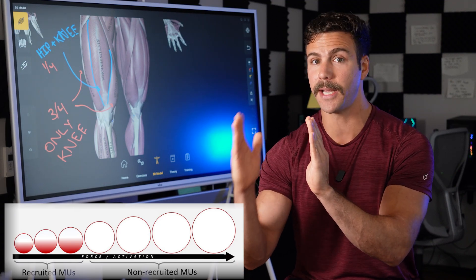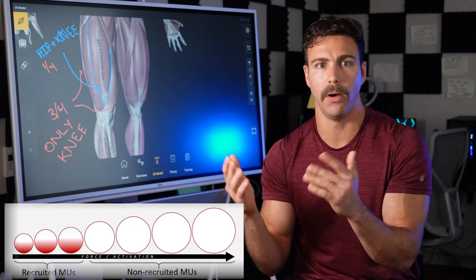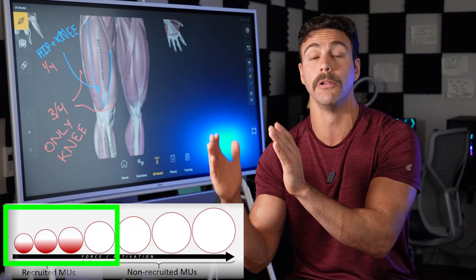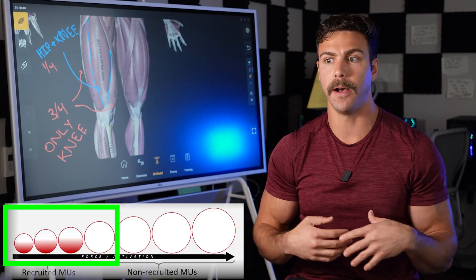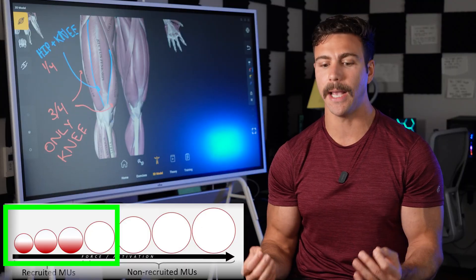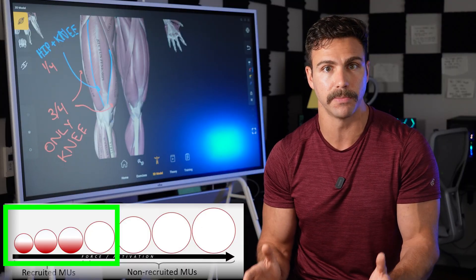So even though we hit failure, at the failure point in that second set, we were maybe only at 50, 60% of the motor unit recruitment that we achieved on that first set. Now the exact number doesn't matter, but we know that we're missing out on a lot of activation of those muscle fibers.